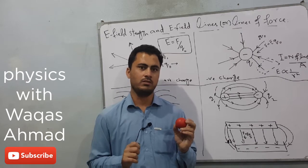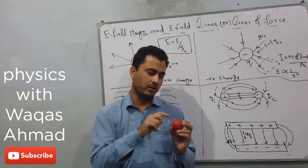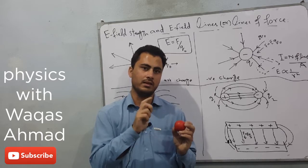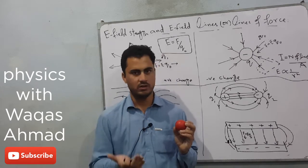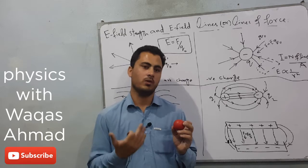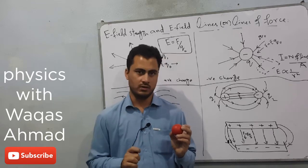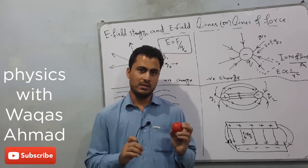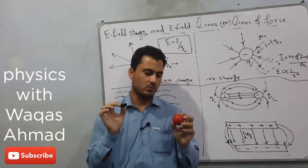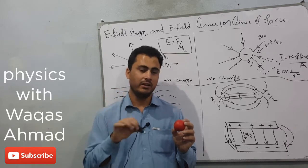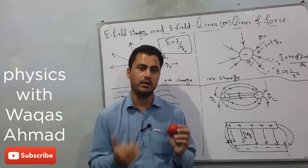An important point to remember is that the test charge must be very very small compared to the source charge, because otherwise it will disturb the electric field of the source charge and we cannot get the exact or true value of the electric field strength. The space or region around the charge in which the electrostatic force of the source charge can be felt by another test charge is known as the electric field. When we represent that electric field by certain lines, those lines are called electric field lines.